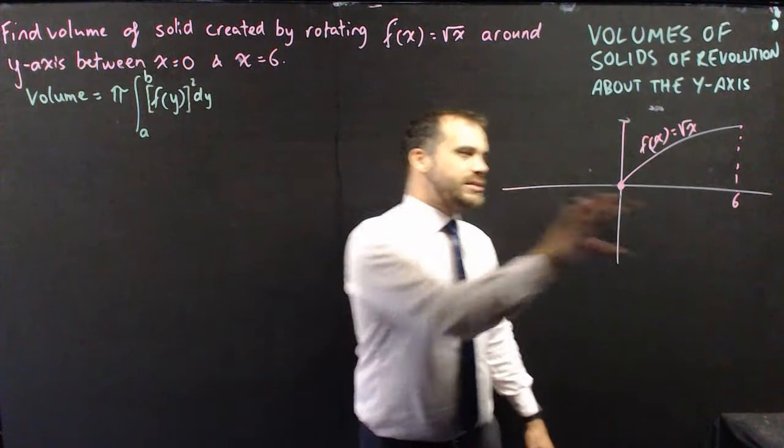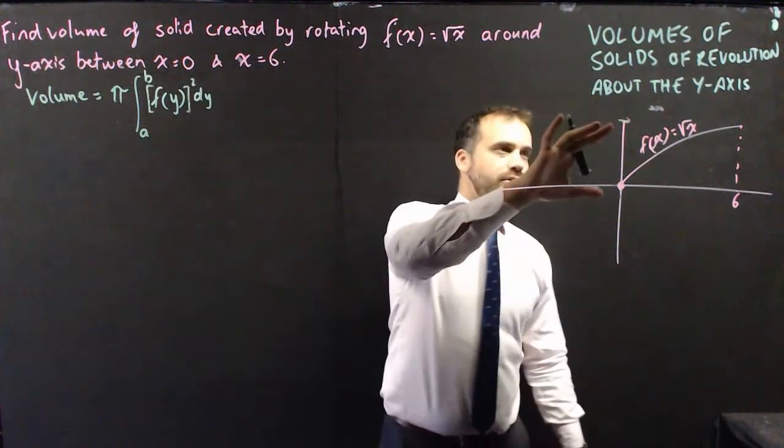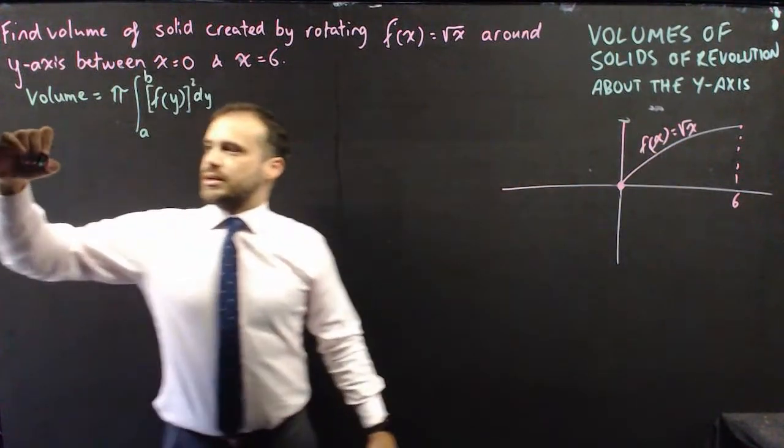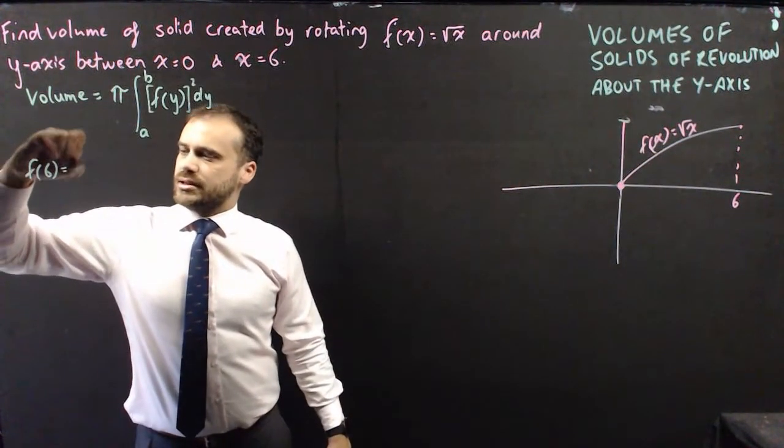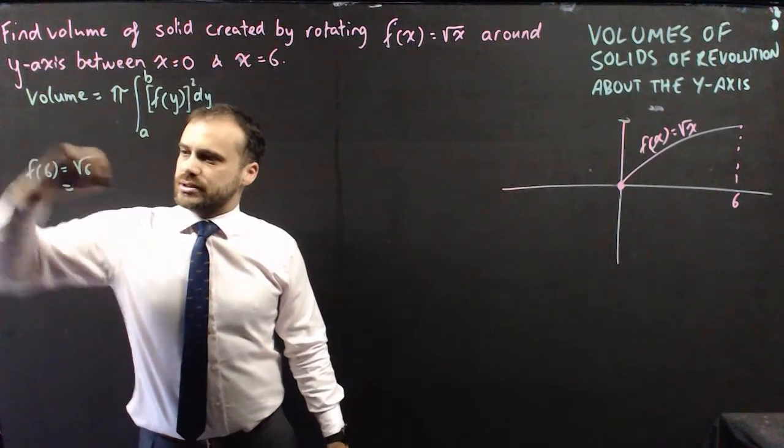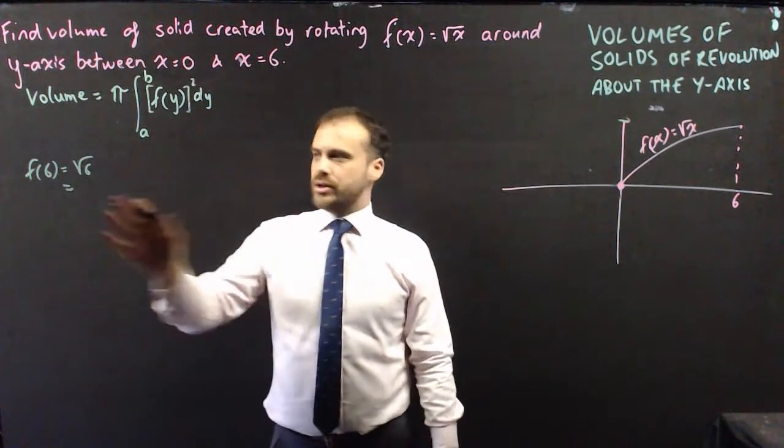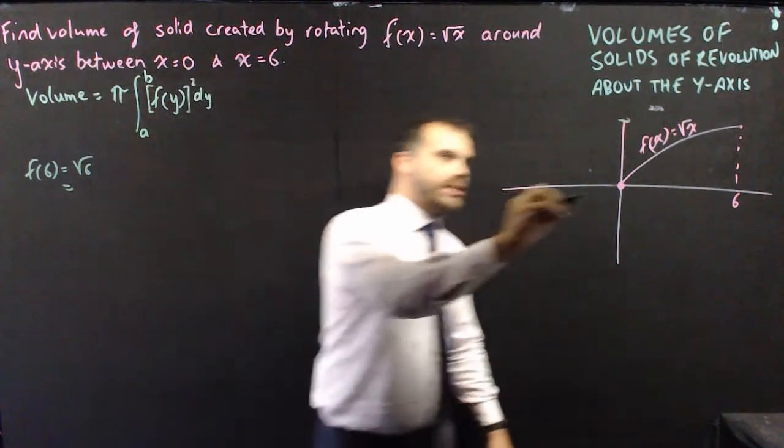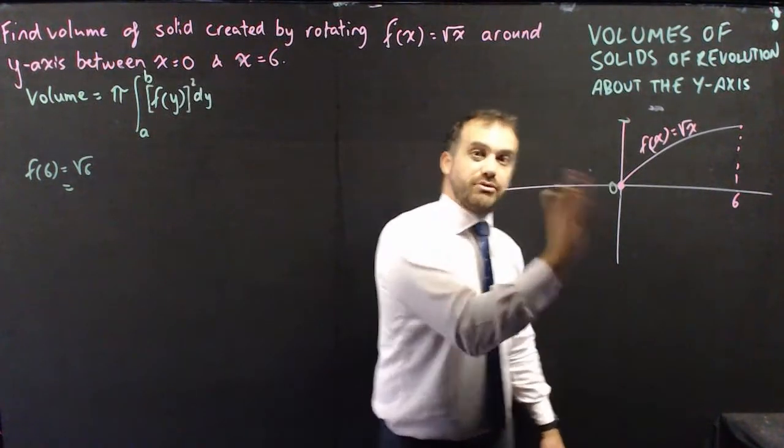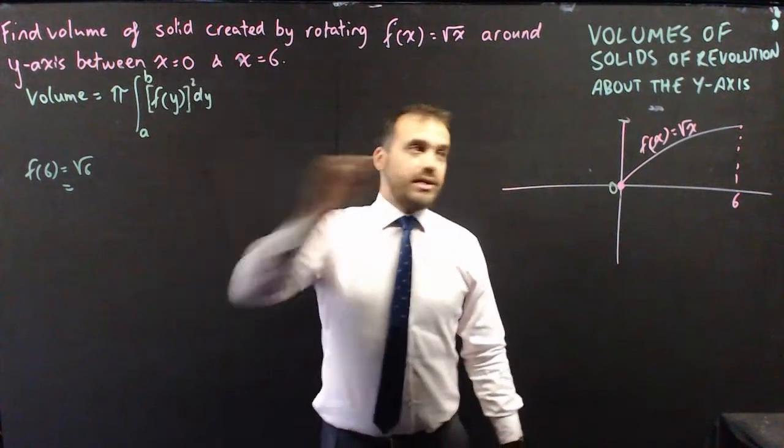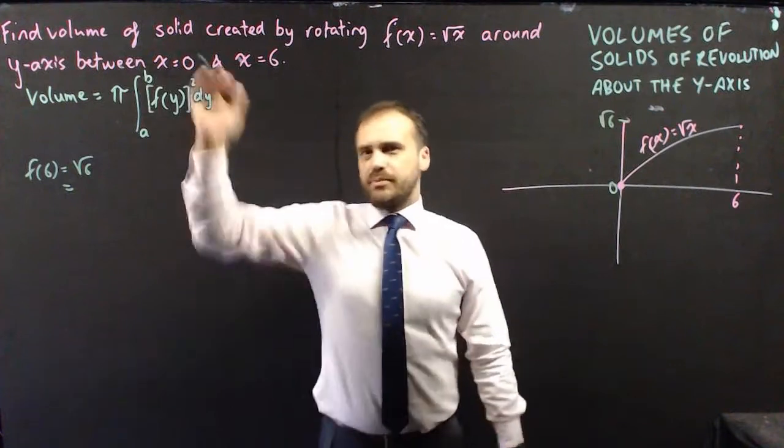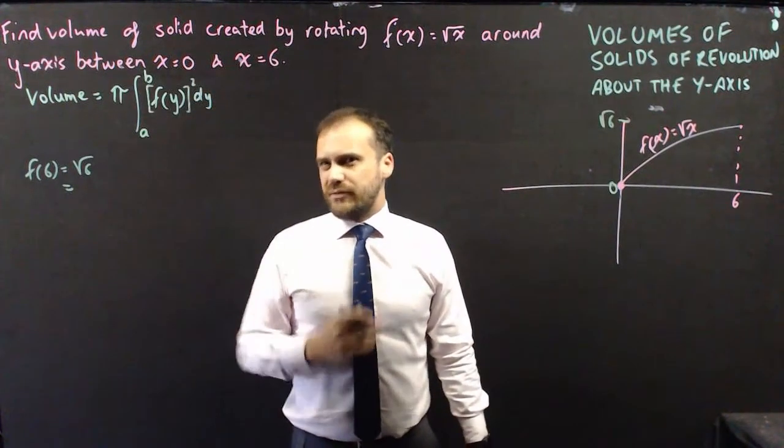So I can easily find that value because I know f(x) equals root x, which means that f(6) equals root 6. So I know that's it. So I can say that my volume is between this point, which happens to be 0, so it is going to be 0 there, but then this point is root 6. So that's my a and my b values taken care of, but this f(y).